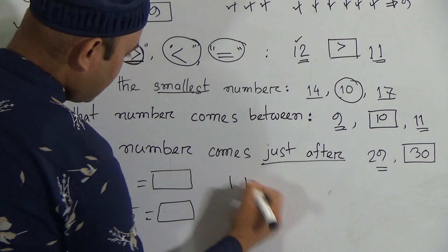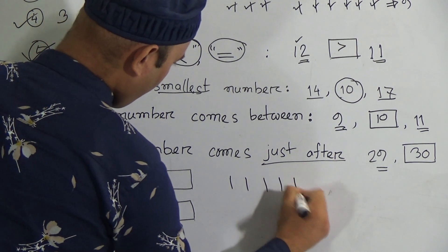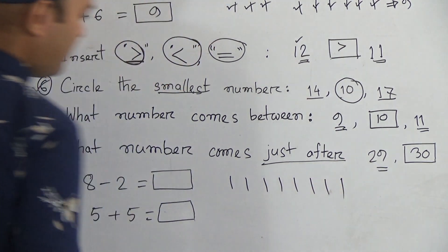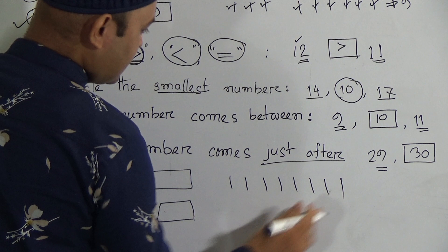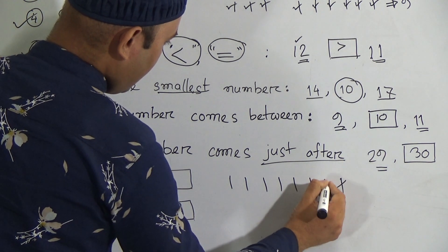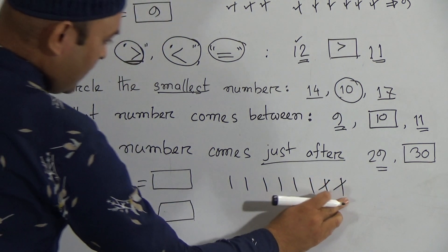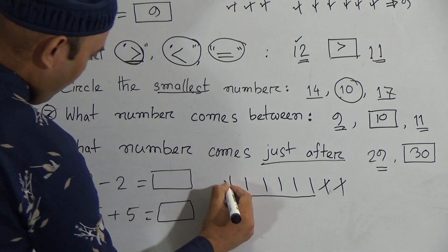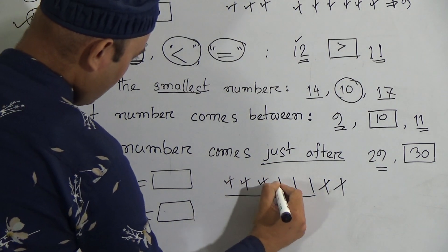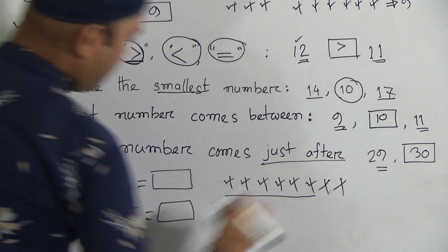My dear students, let us consider we have 8 sticks: 1, 2, 3, 4, 5, 6, 7, 8. And then certainly 2 is broken. 2 is broken. Then how much are there? 1, 2, 3, 4, 5, and 6.